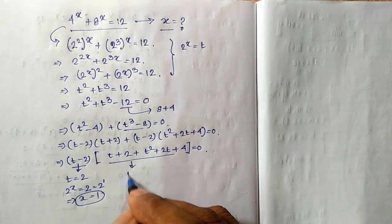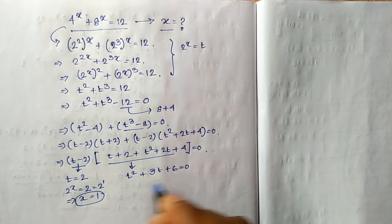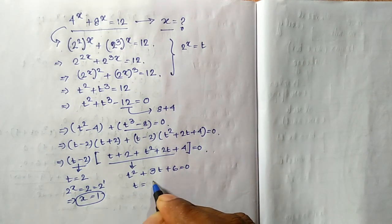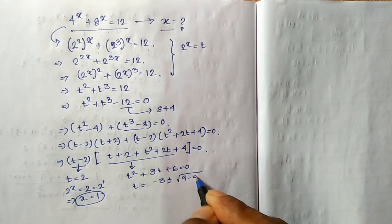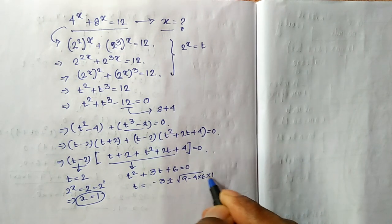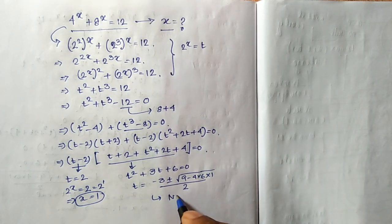But from here if I try to find the value of t, then t squared plus 3t plus 6 equal to 0. That means t equals negative 3 plus minus root over 9 minus 4 into 6 into 1 whole divided by 2, which is not real.